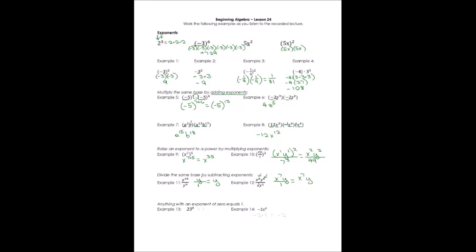One more thing: in examples 13 and 14, anything with an exponent of 0 equals 1. So 23 to the power of 0 equals 1, and even 5 million to the power of 0 equals 1. In example 14, for negative 2x to the 0, remember the only thing raised to that exponent is the x. The negative 2 is just out front, multiplied times x to the power of 0, which is 1. So the answer is negative 2.